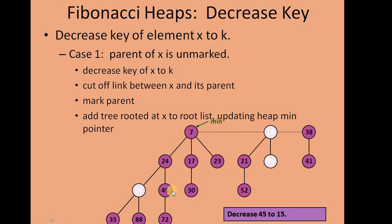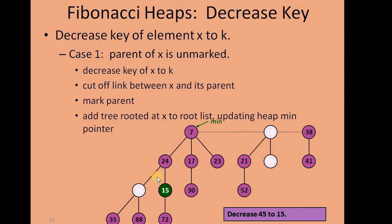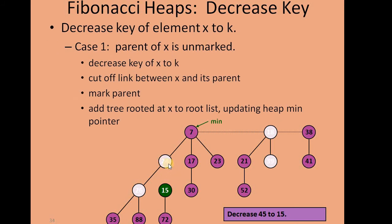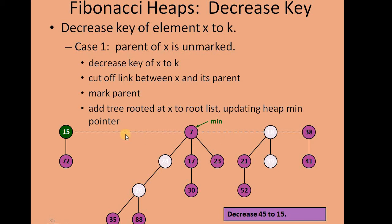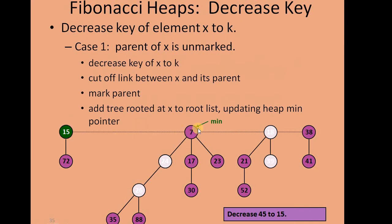Let's see this with an example. We want to decrease the key 45 to 15. Decreasing from 45 to 15 obviously violates the min-heap property, since its parent 24 is larger than 15. We cut this node from its parent, and the parent gets marked. Then this node is joined into the root list of the heap. Once joined, we update the heap min pointer if required. In this case, 15 is larger than the current min value, so we do not need to update the min heap pointer.